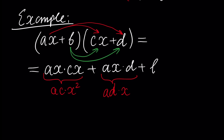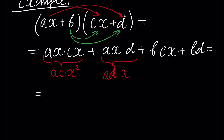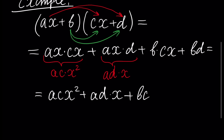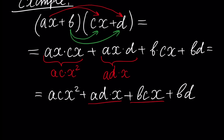Next we multiply b times cx squared plus bd. If we rewrite, it will be acx squared plus adx plus bcx plus bd. We know that these two monomials are similar because we have common elements — ad and bc are coefficients — so we can add these two monomials.